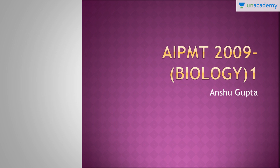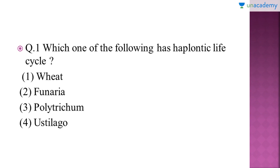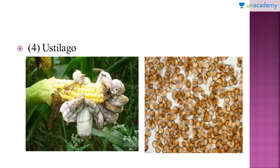We will start with question number 1 of the AIPMT 2009 question paper, biology section. Question number 1: which one of the following has a haplontic life cycle? I hope you know the meaning of haplontic life cycle, so please choose the option carefully. The right answer is option number 4, that is Ustilago, which is also a type of smut fungi and has the haplontic life cycle.